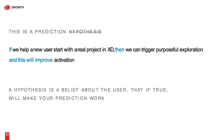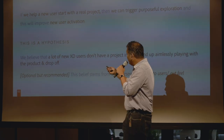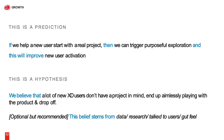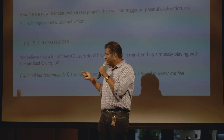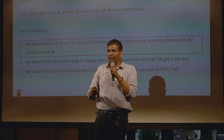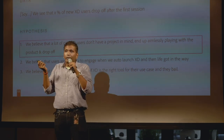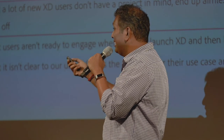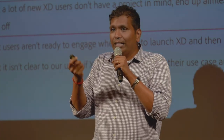So in this case, the hypothesis could be something like: we believe that a lot of users don't have a project in mind — they end up playing aimlessly in the tool and then never come back. This matters because the same data point could have multiple hypotheses behind it. For example, users are not ready to engage when the product comes up. Or it isn't clear to the user what this thing even is, so they come to it and think, oh, this is probably not what I'm here for, and they leave.